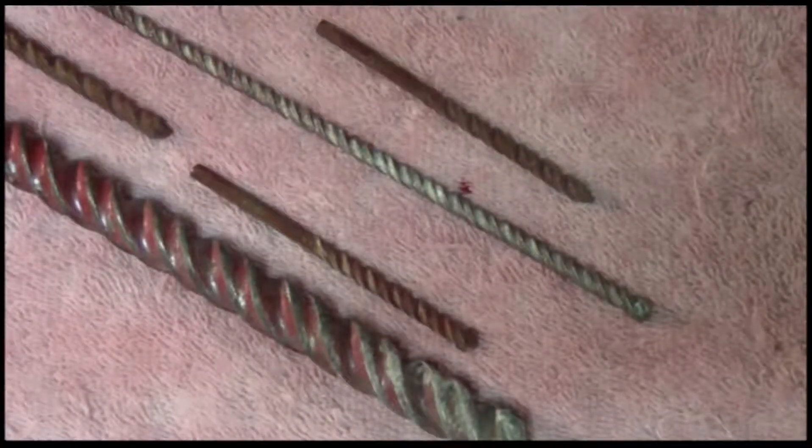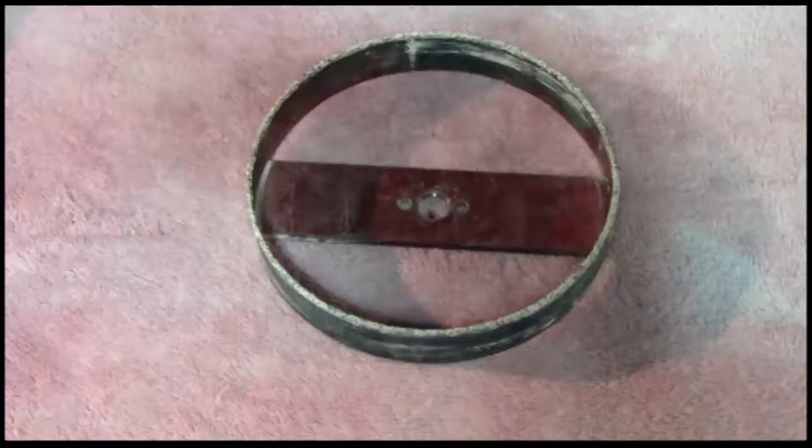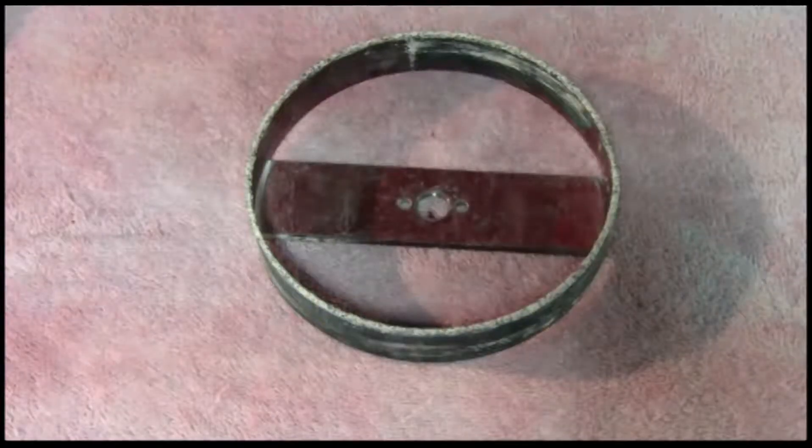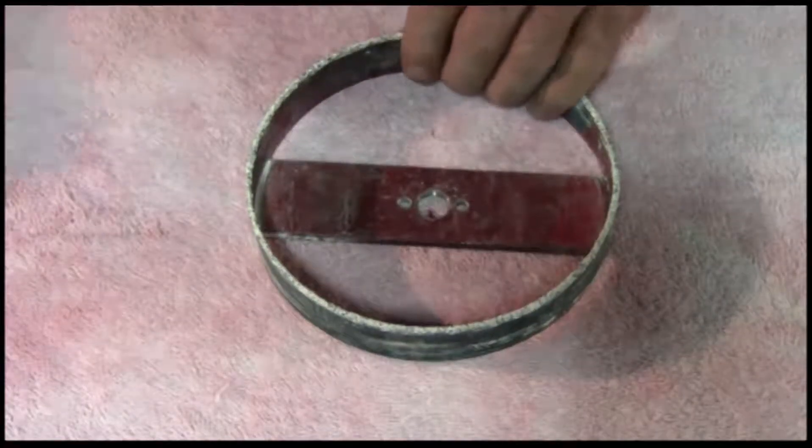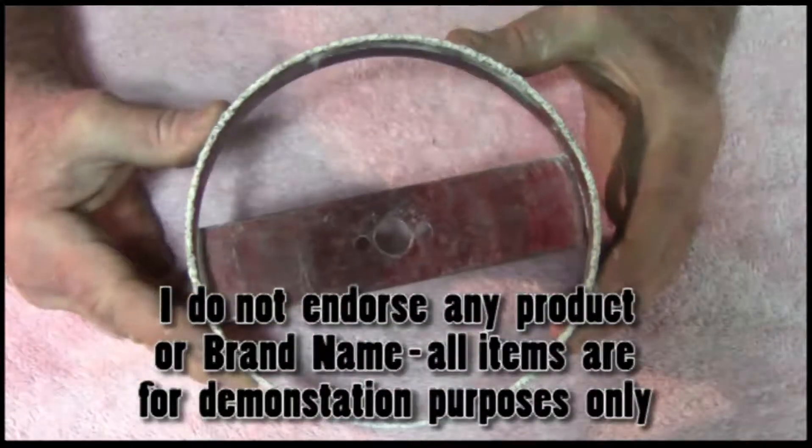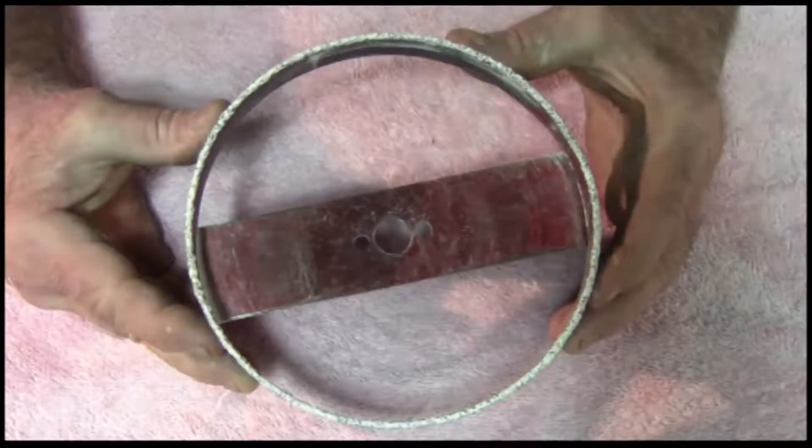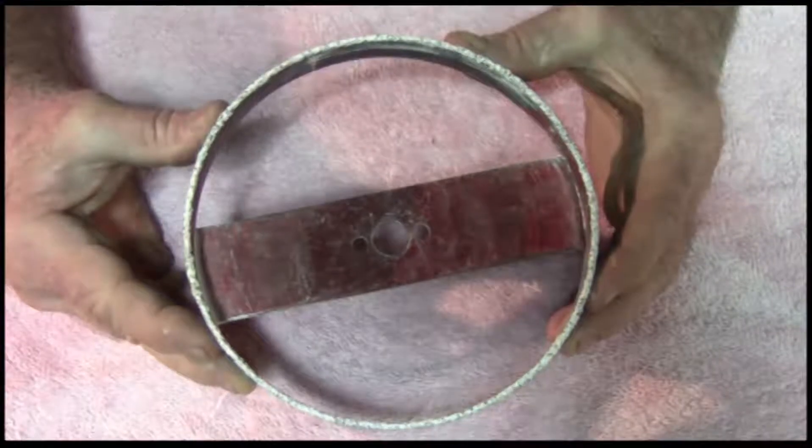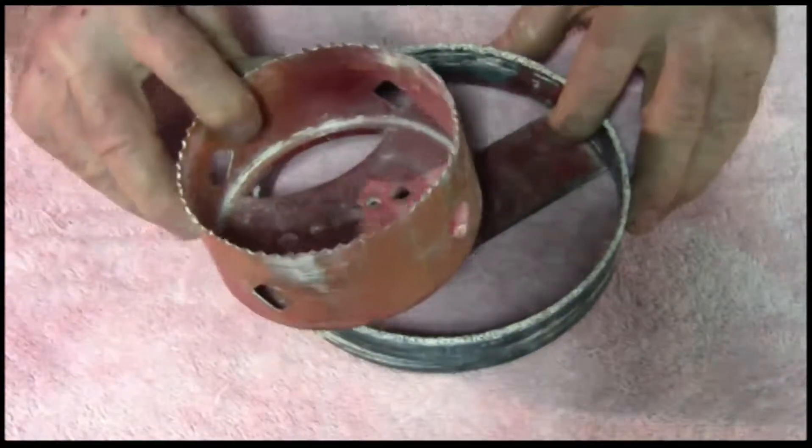A full array of masonry bits is good to have as well. Here's some specialty bits I almost forgot to mention. This bit is used with a pilot bit. This particular one is a six inch bit used to drill out holes for recessed remodel cans.